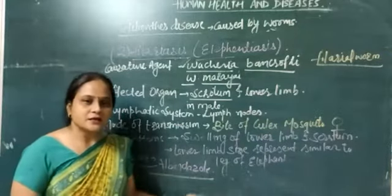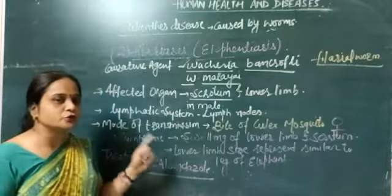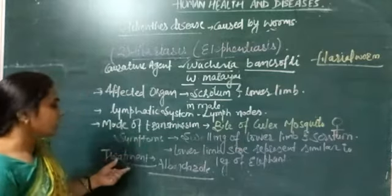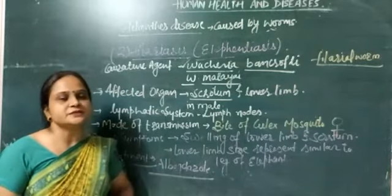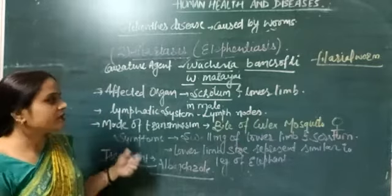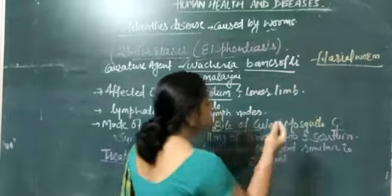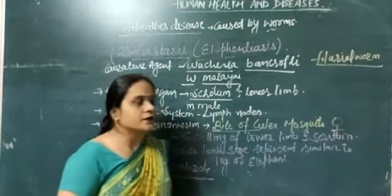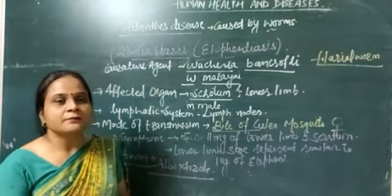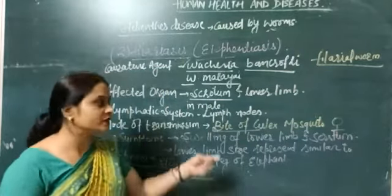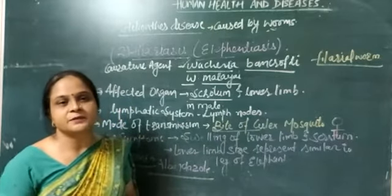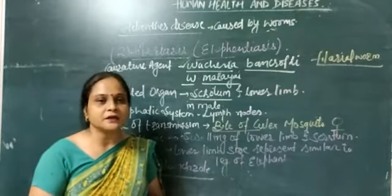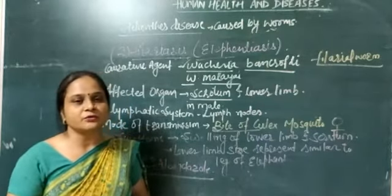Both diseases — Ascariasis and Filariasis — can be treated by taking albendazole. To prevent Filariasis, since it is a vector-borne disease, if we eliminate the vector — that is, kill the mosquito — then transmission from an unhealthy person to a healthy person can be prevented. This concludes the helminthic disorders; in the next video we will discuss fungal disorders.